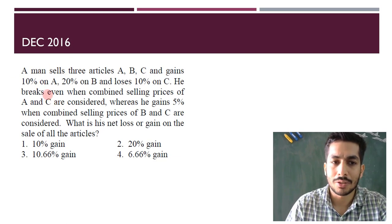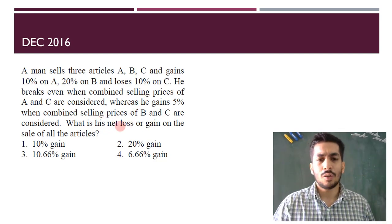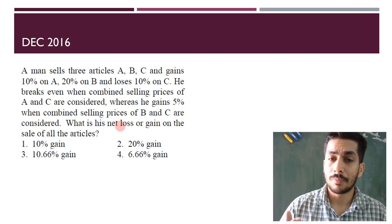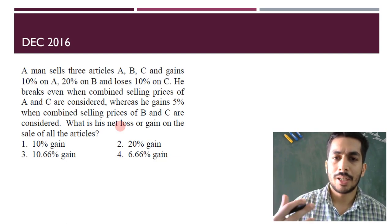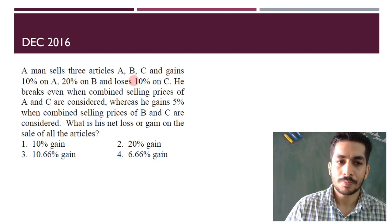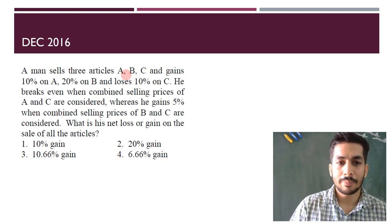For example, consider this question: a man sells three articles A, B, and C, and gains 10% on A, 20% on B, and loses 10% on C. Instead of solving it using equations with X, Y, and Z, which might become complicated and take two to three minutes or more, whenever you get percentage questions, take a random value that can be easily divided into its percentage.